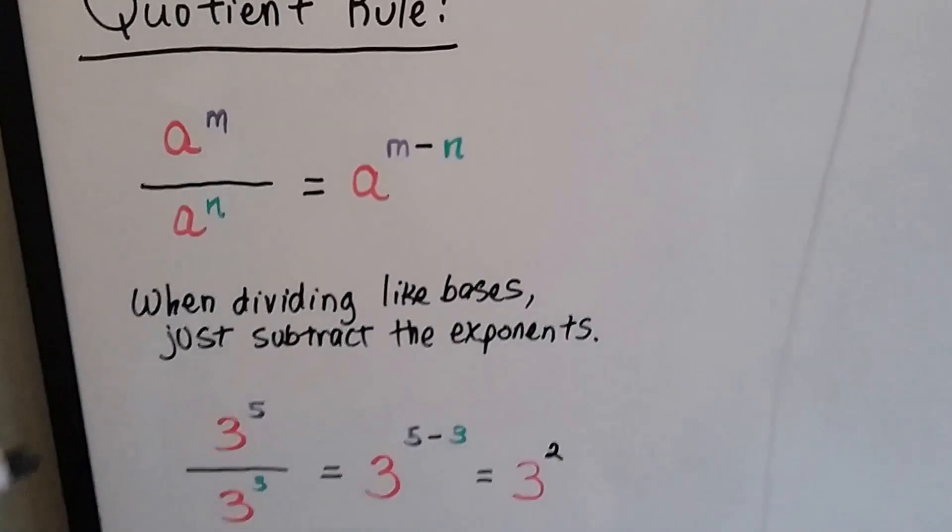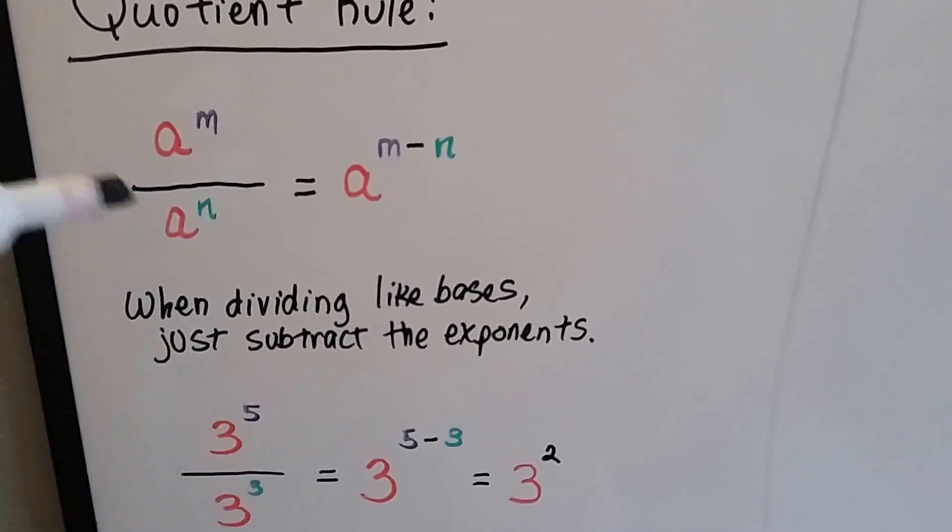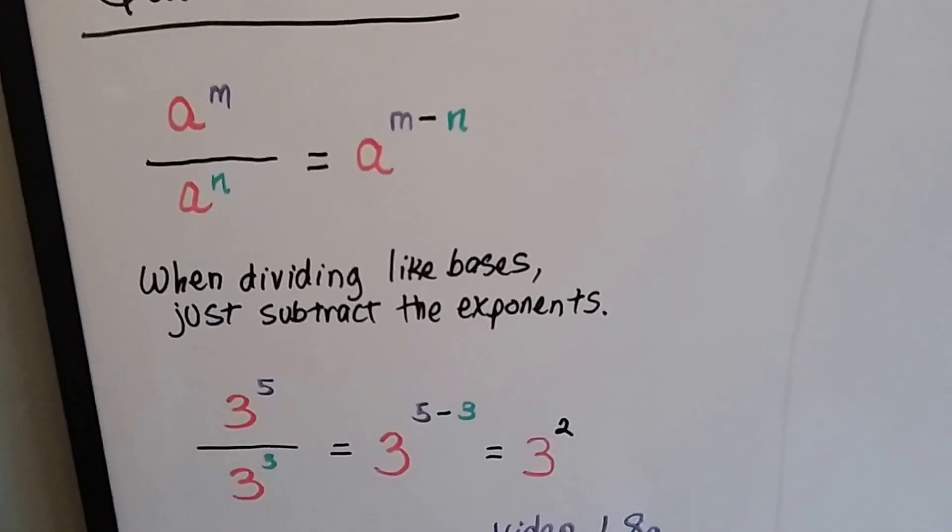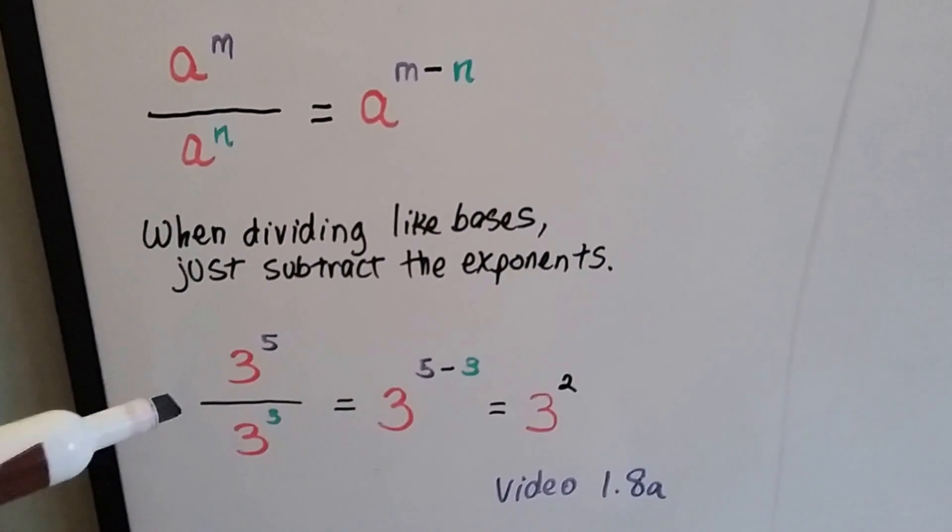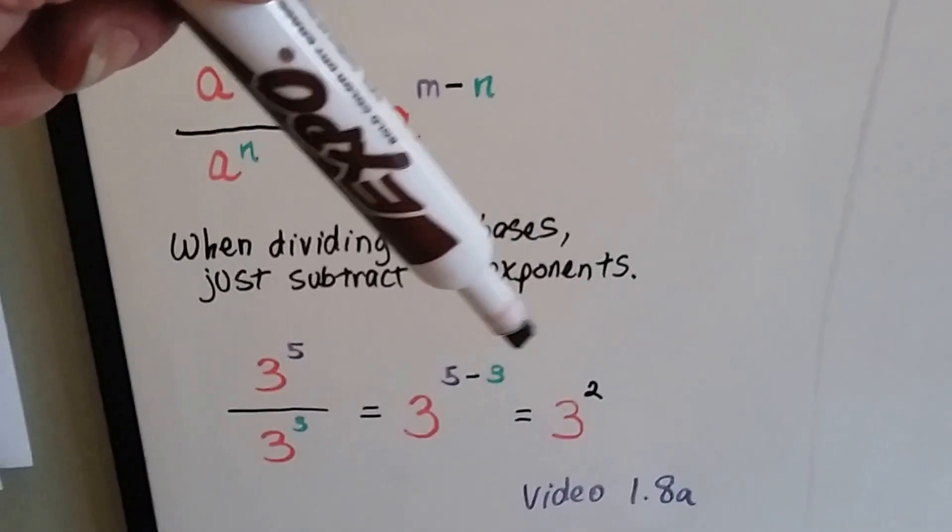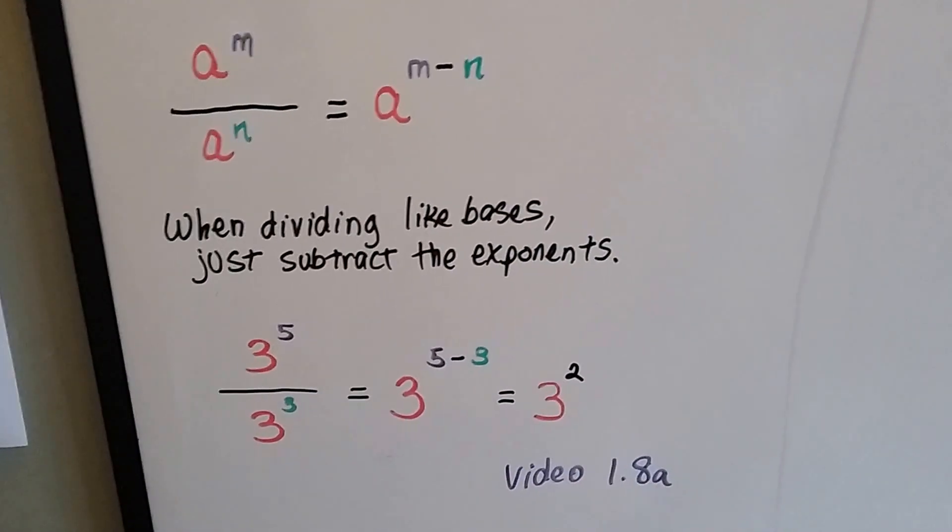The quotient rule said if we have a to the m power over a to the n power, that we just subtract them. When dividing like bases, just subtract the exponents. So this would be 3 to the 5 minus 3. It would be 3 to the 2nd power. That was also in video 1.8a.